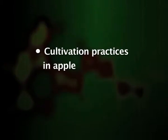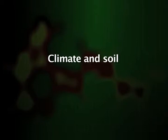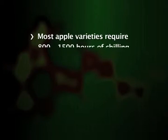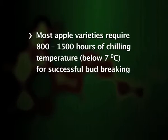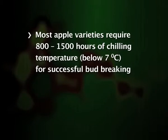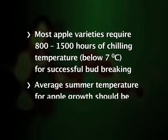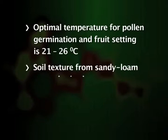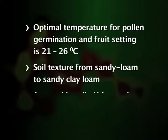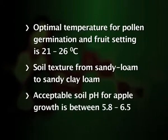Most apple varieties require 800 to 1500 hours of chilling temperature, that is below 7 degrees Centigrade, during winter for successful bud breaking in spring. The average summer temperature for apple growth should be 21 to 24 degrees Centigrade. The optimal temperature for pollen germination and fruit setting is 21 to 26 degrees Centigrade. Apple can grow in a wide range of soil types; however, the best soil texture is from sandy loam to sandy clay loam. The acceptable soil pH for apple growth is between 5.8 to 6.5.